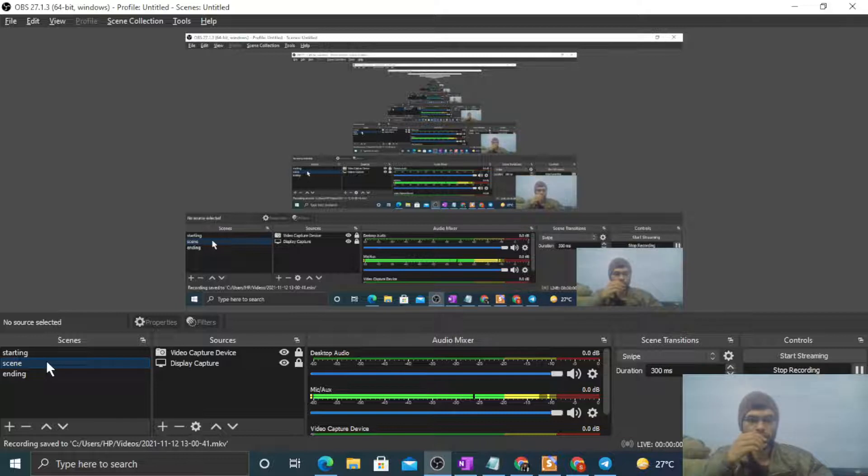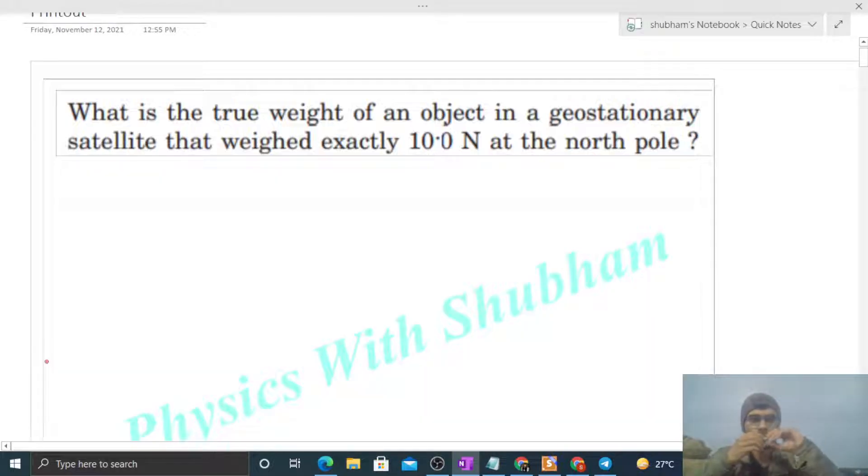Okay, hi everyone. Today let's discuss one interesting problem. It says, what is the true weight of an object in a geostationary satellite that weighed exactly 10 Newton at the north pole?